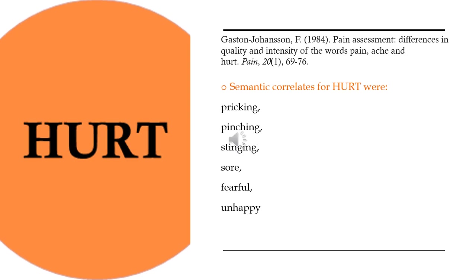Last but not least, the word hurt. Semantic correlates for hurt are: pricking, pinching, stinging, sore, fearful, unhappy. We can see that the intensity in which these words are perceived as painful is very different, and you can feel that they convey different intensities. This task was just an introduction for neuroscientific research on language and pain.